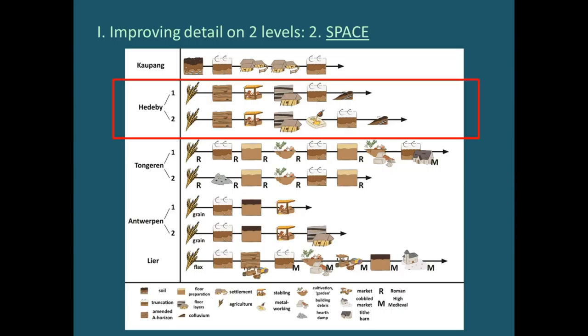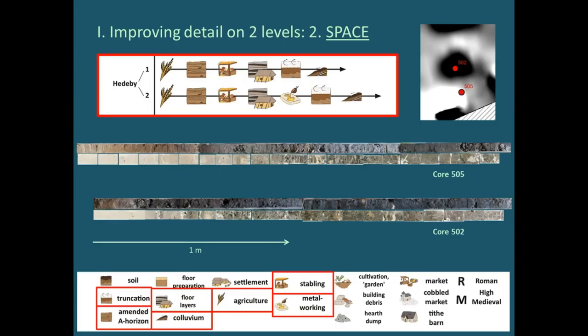In my PhD, looking at all these different sites, I tried to pinpoint the different phases, represented here with icons as a way to simplify the changes happening. Looking at Hedeby, having two sample locations already allows us to understand the space a little better. Comparing the two cores — the top one from outside the geomagnetic anomaly, core 502 from inside — the beginning is actually really similar, and only in the upper roughly 50 centimeters is there a change going on.